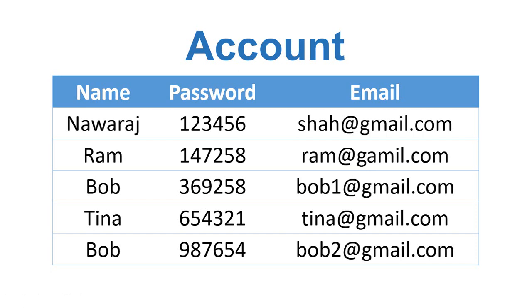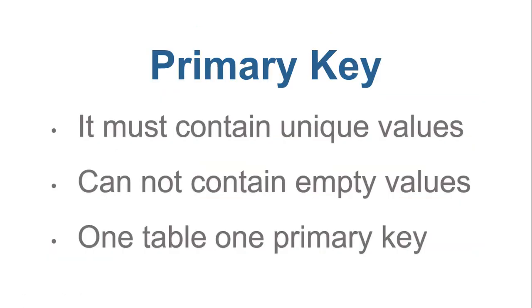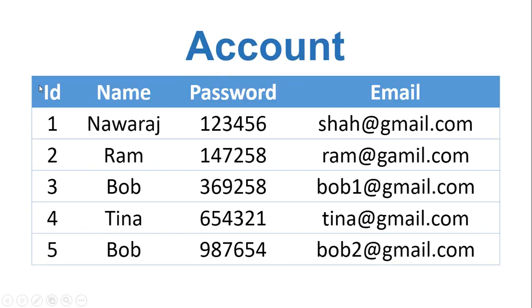But in some cases we do not have a column with a unique record. At that time we have to make a primary key. Before we make a primary key, we have to consider some rules: the column set as a primary key must contain unique values, cannot be empty, and one table can have only one primary key. Using those rules, here I make the ID column a primary key.